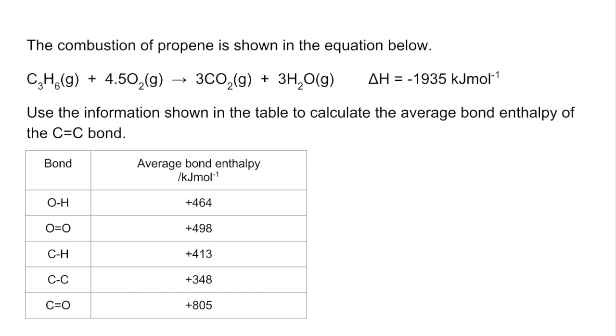I'm going to use this question which centers around the combustion of propene to illustrate that. You can see there we've got the balanced chemical equation and we've got the enthalpy change minus 1935. We've also been given a table with some of the bond enthalpies in but there's one missing and that's the C=C double bond. So the task is we have to calculate a value for the average bond enthalpy of the C=C double bond.